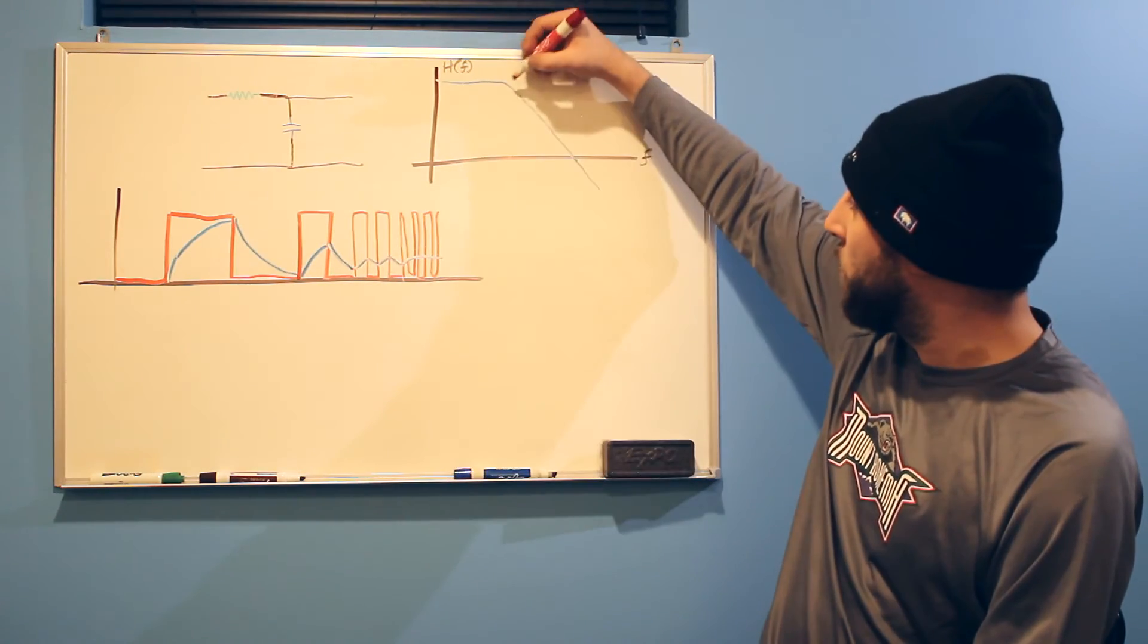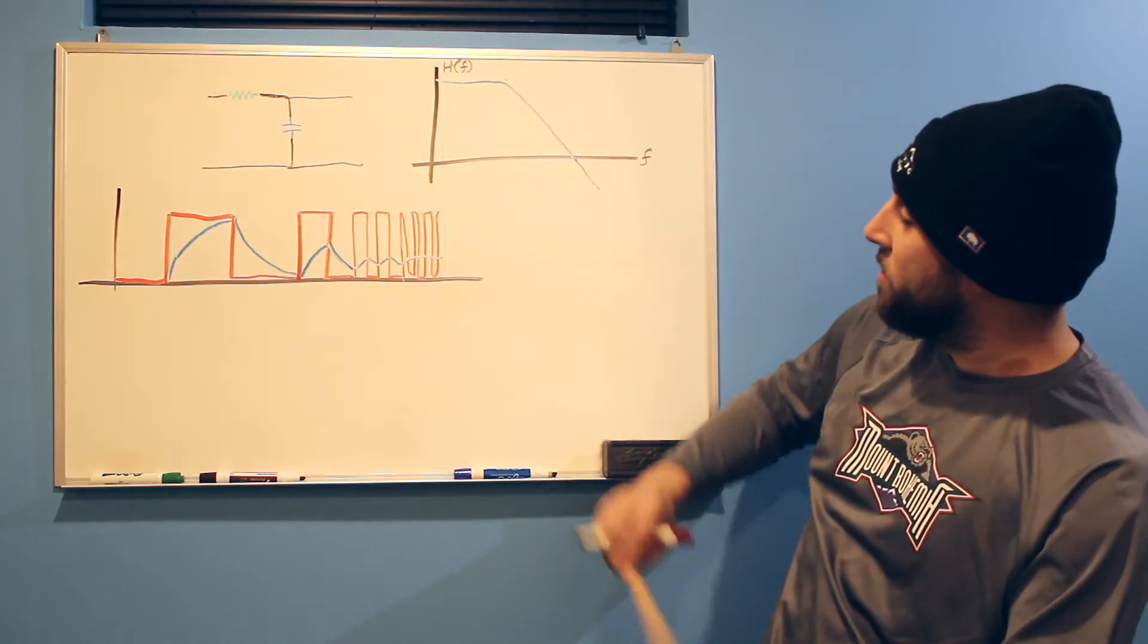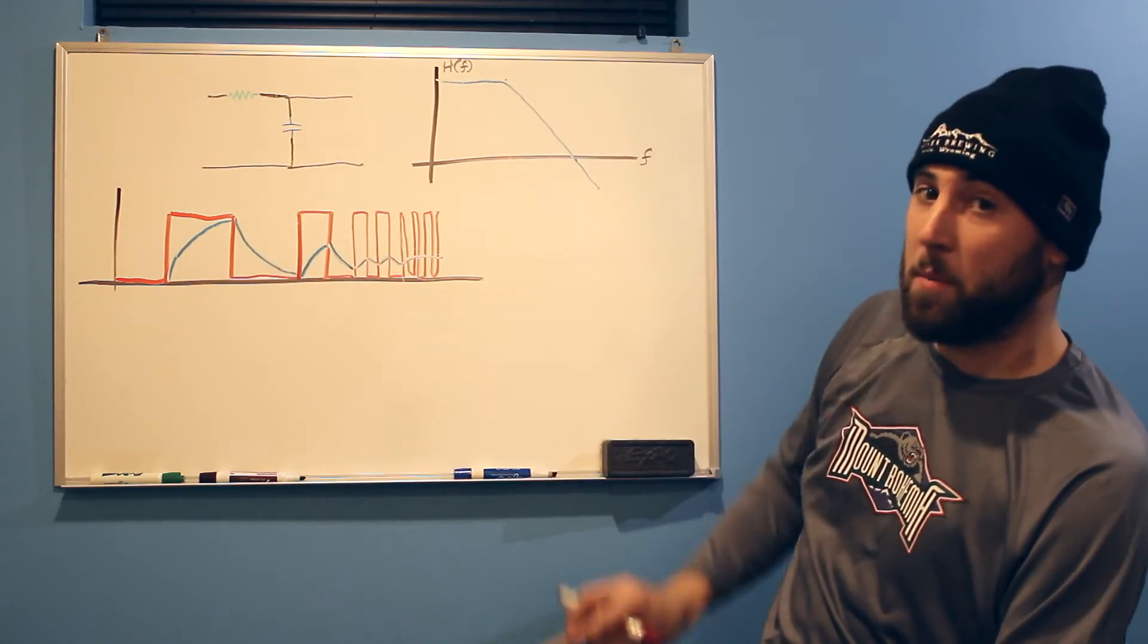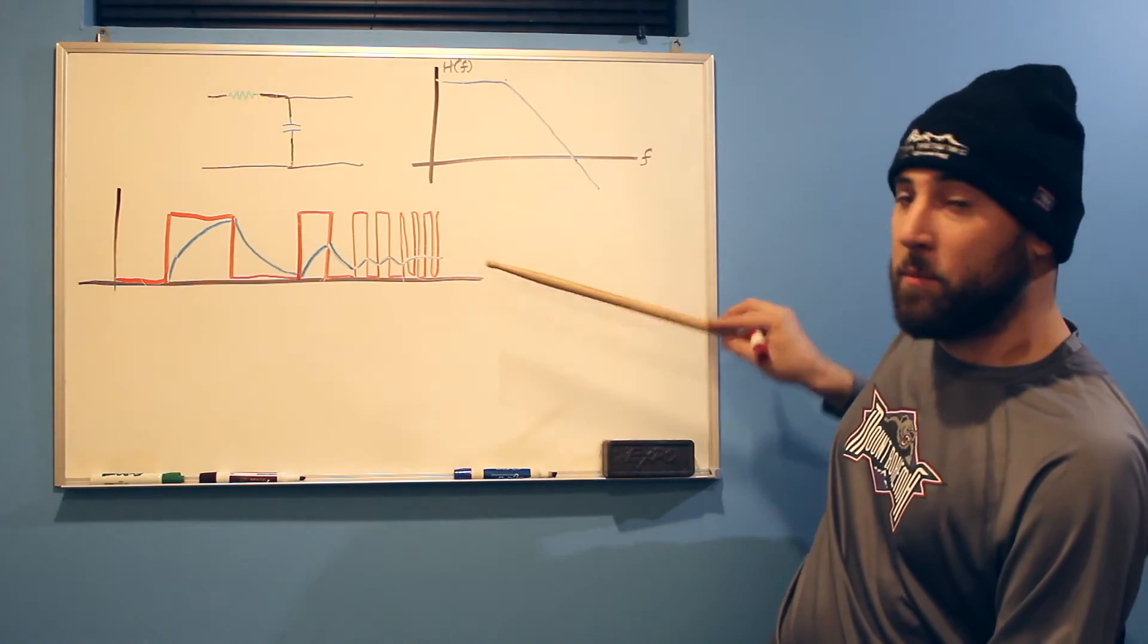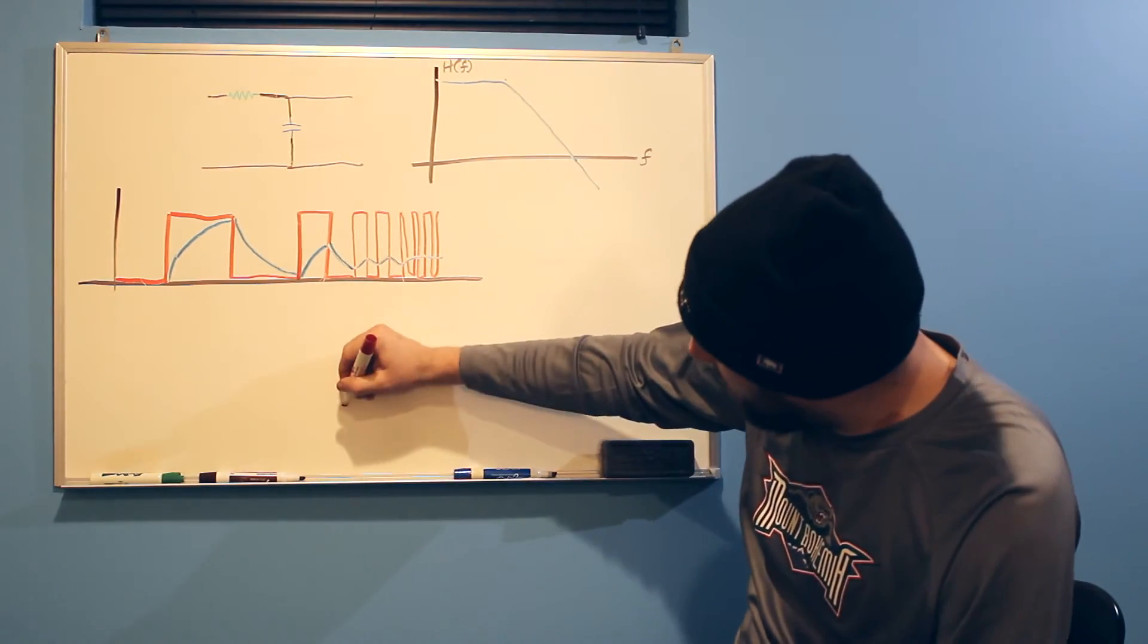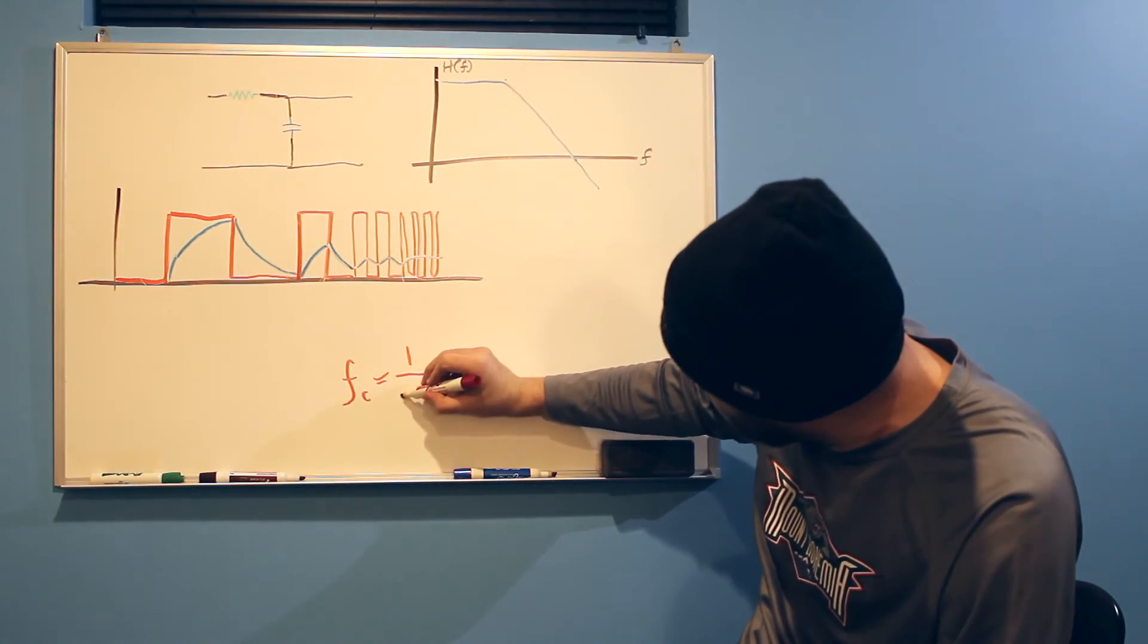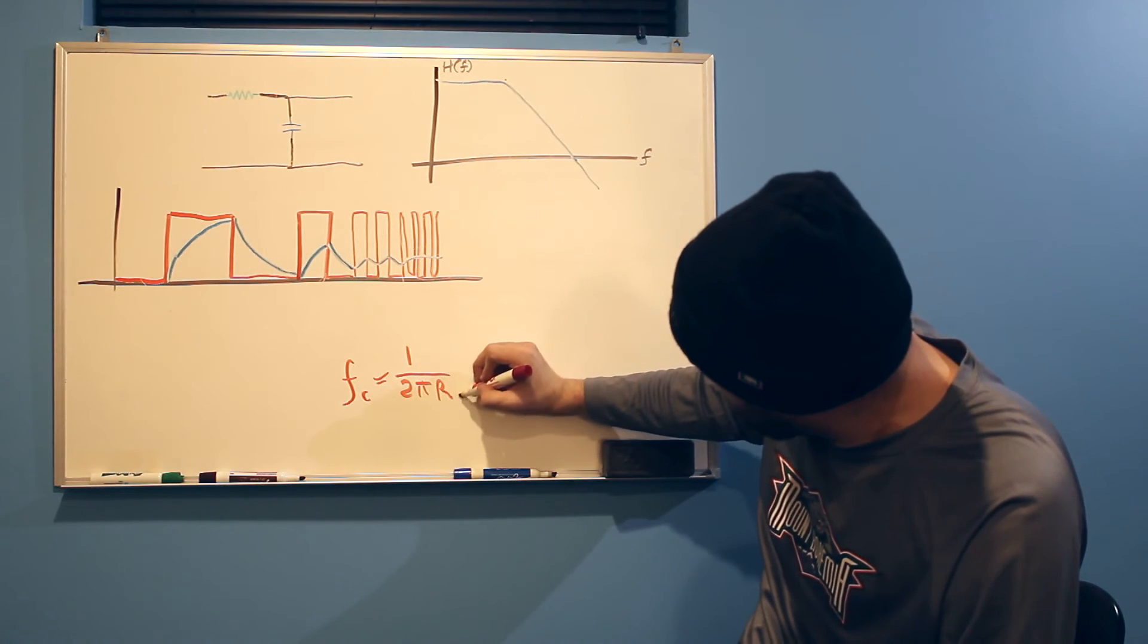So how do we know where this point is? Well, that point is kind of sort of this frequency right here where it can just barely keep up. It just barely keeps up and then it starts attenuating. So there's a nifty equation for that. It's called Fc equals 1 over 2 pi RC.